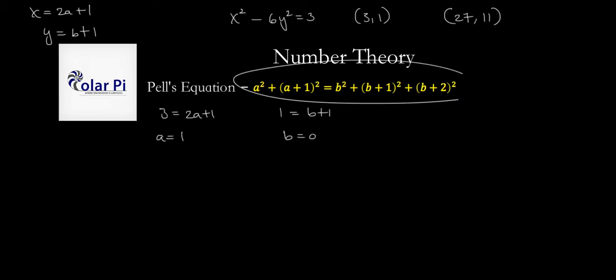But it's a trivial solution. Because look at what we'll get. We'll get 1² for a², plus (a+1) which is 2, so 2² on the left side equals, and then b is 0, so 0² + 1², and then plus (b+2) which is 2². Well, how trivial. It just says 1² + 2² is equal to 1² + 2². We know that. So not so interesting.